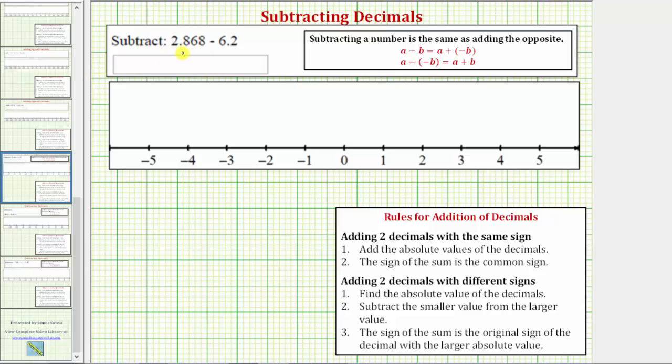We're asked to subtract 2.868 minus 6.2. So the first thing to recognize here is that we're subtracting a larger value from a smaller value and therefore this difference is going to be negative.